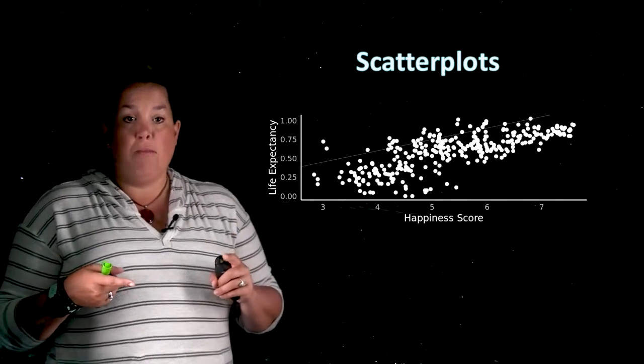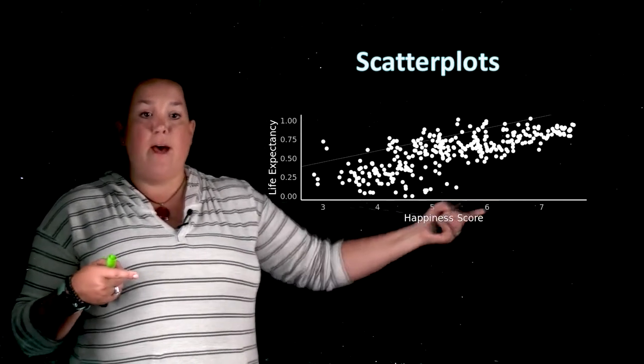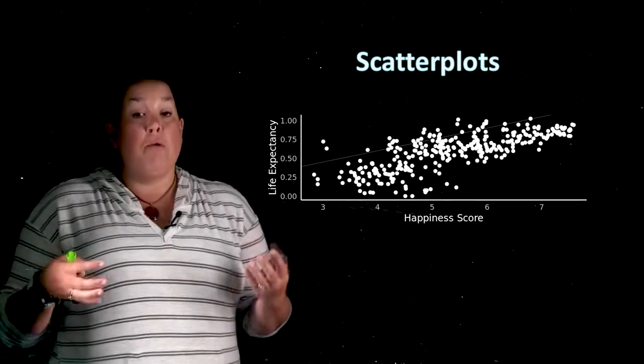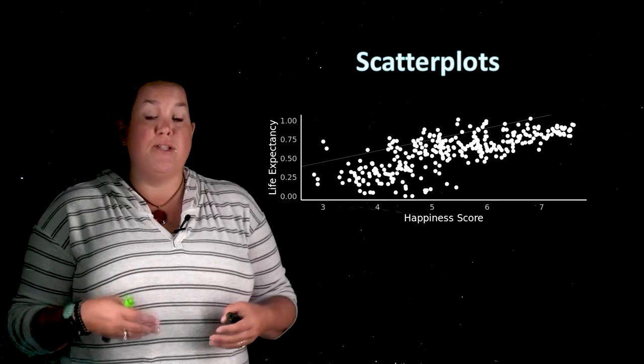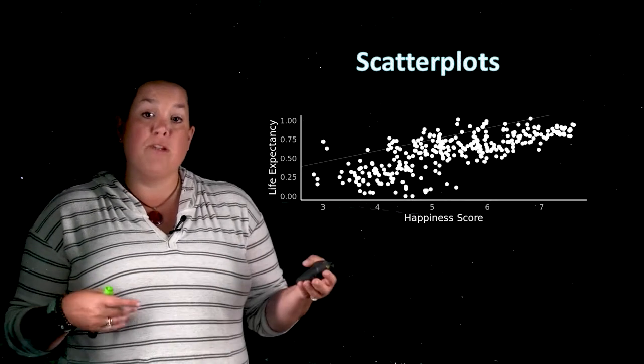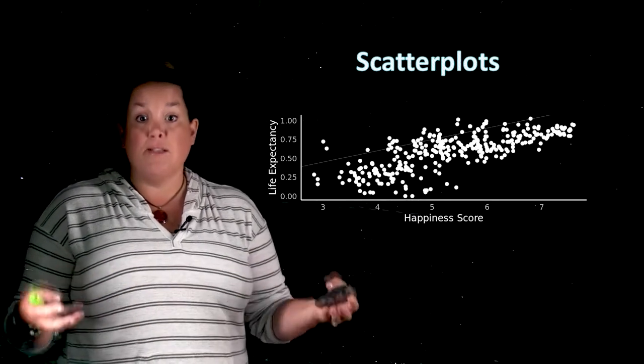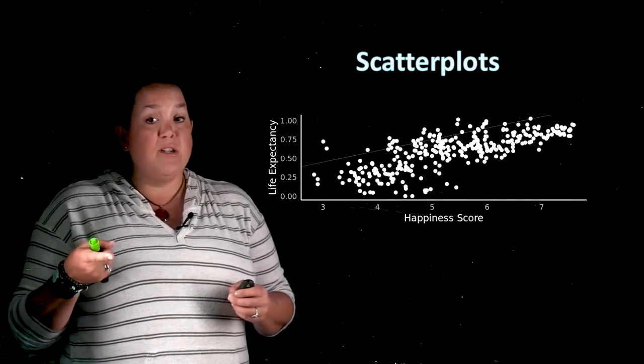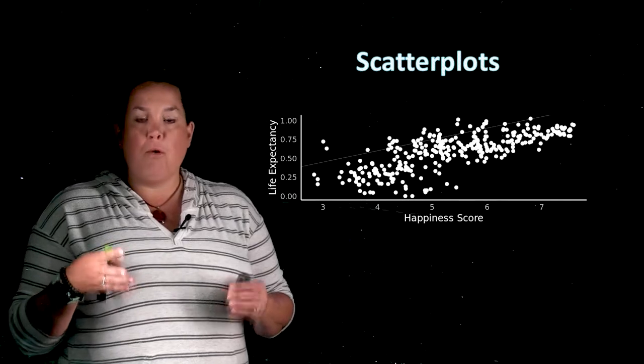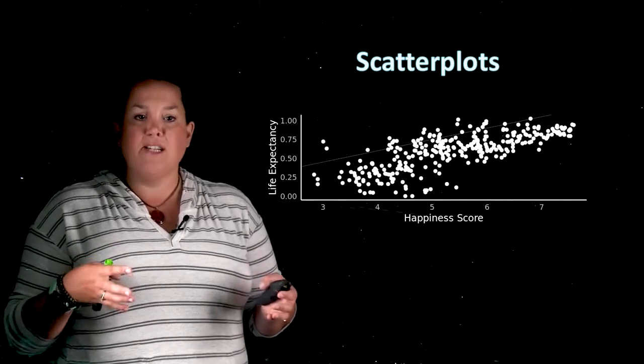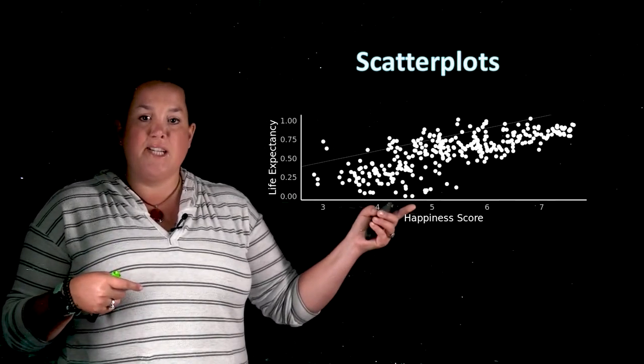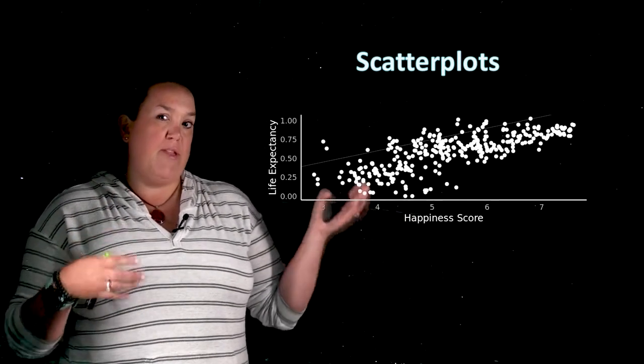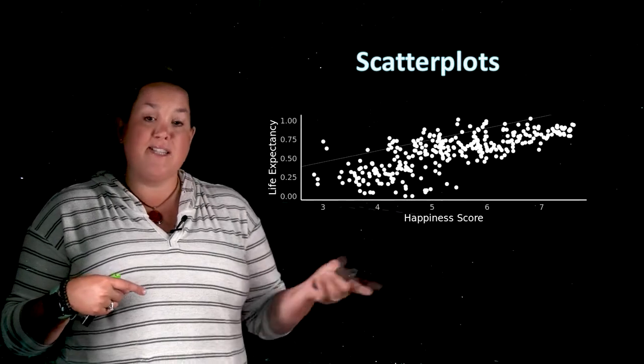Now the other thing to remember with scatterplots is that the x and y axis are representing explanatory and response variables. Remember an explanatory variable is doing the explaining and the response variable responds to or changes based on a change in that explanatory variable. I always tell students it's really easy to remember which variable goes on which axis because this x axis is the explanatory variable.